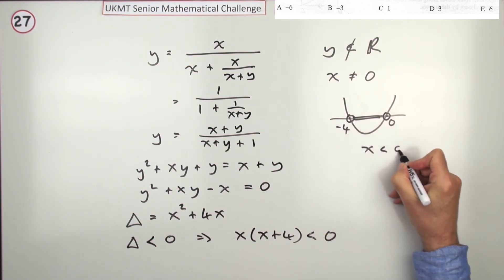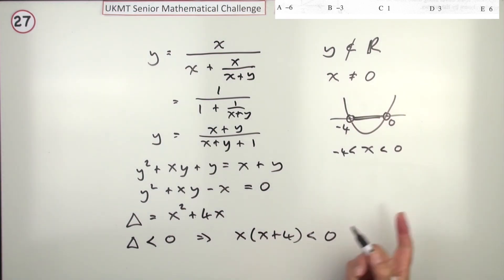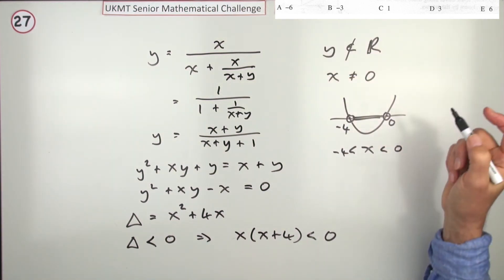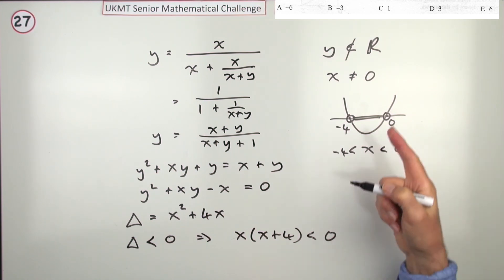So, there's the solution. x has to be less than 0, and greater than negative 4, for y not to have any real values. Now, you just look back and see, which of these falls into this interval, and it's the negative 3. x equals negative 3 is the required result. So, that's answer B.